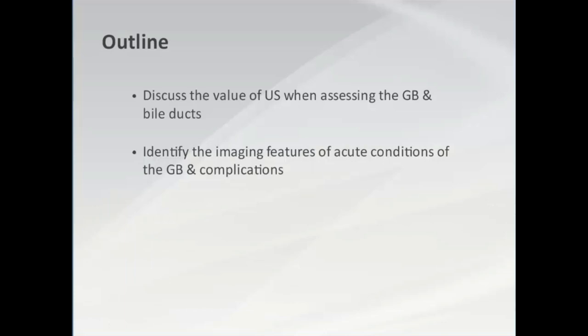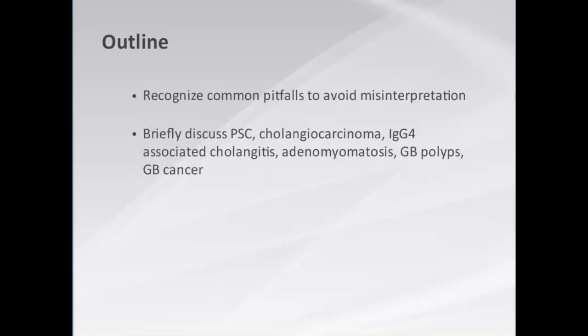We'll discuss the value of ultrasound when assessing the gallbladder and bile ducts. We'll identify the imaging features of acute conditions of the gallbladder and complications, and recognize common pitfalls to avoid misinterpretation. We'll briefly discuss primary sclerosing cholangitis, cholangiocarcinoma, IgG4-associated cholangitis, adenomyomatosis, gallbladder polyps, and gallbladder cancer.